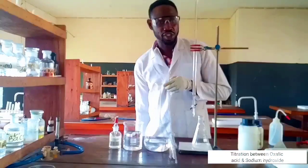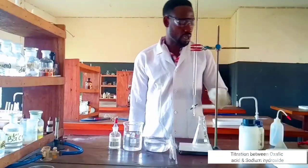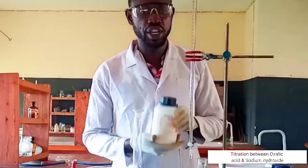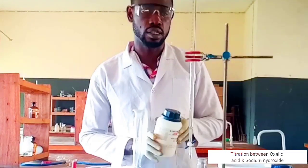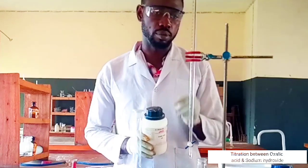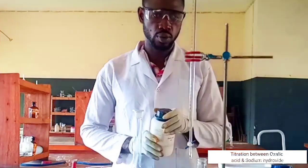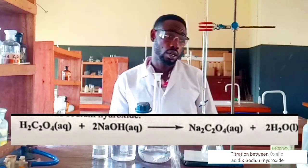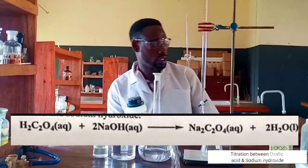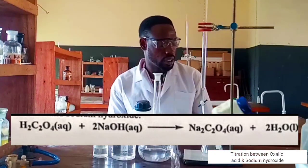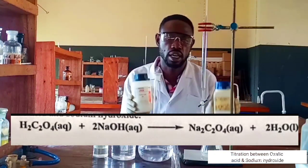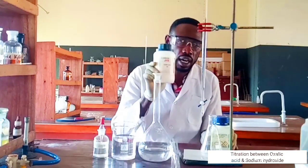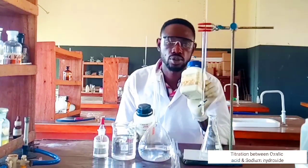I'm going to do another titration video, but this time around, a titration between a weak organic acid known as oxalic acid, with IUPAC name ethyl-dioic acid, with a molecular formula of C2H2O4. It is actually a di-basic acid versus sodium hydroxide. This titration is going to take place between a weak acid and a strong base.